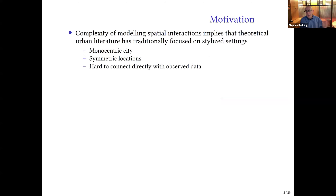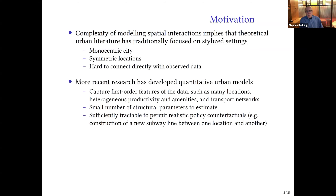To set the background: the complexity of modeling spatial interactions between agents in geographical space meant that the theoretical literature on modeling cities traditionally focused on very stylized settings — in particular, models of a so-called monocentric city, where all employment is concentrated at a single point in the center of the city, or models where all locations within the city are assumed symmetric. Obviously, when we look at real world cities, they don't look like that — they differ in terms of access to the coast, rivers, running water, and so on.